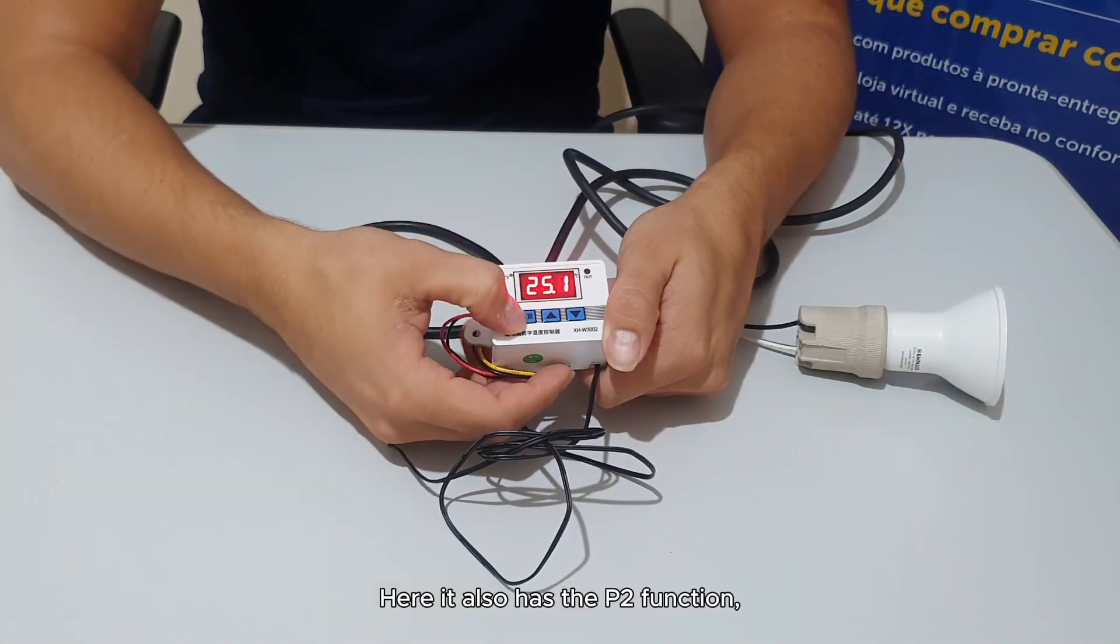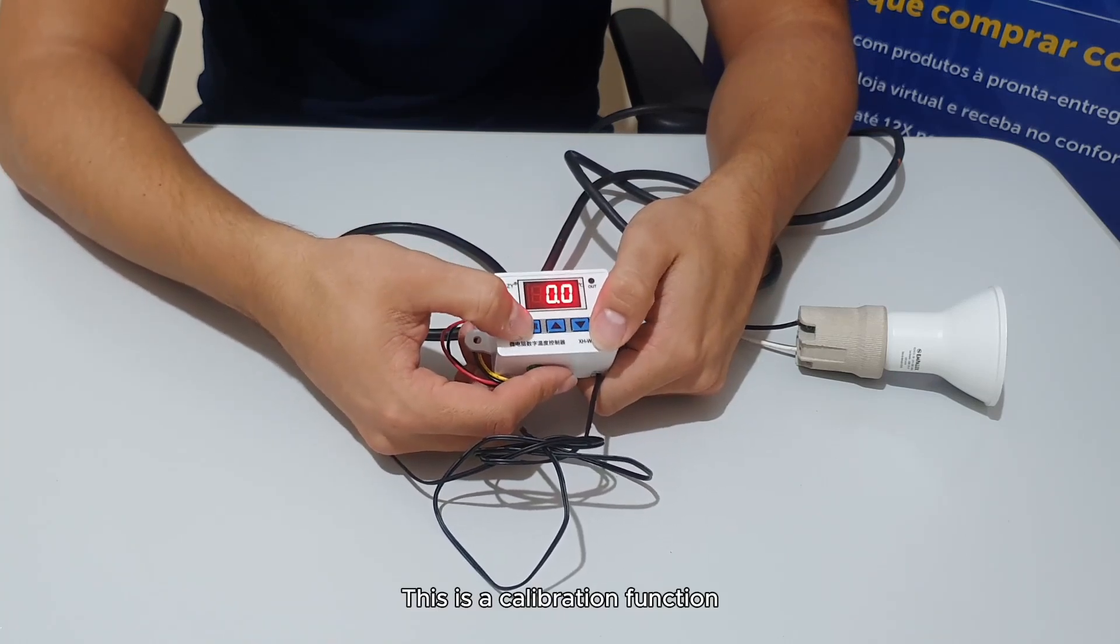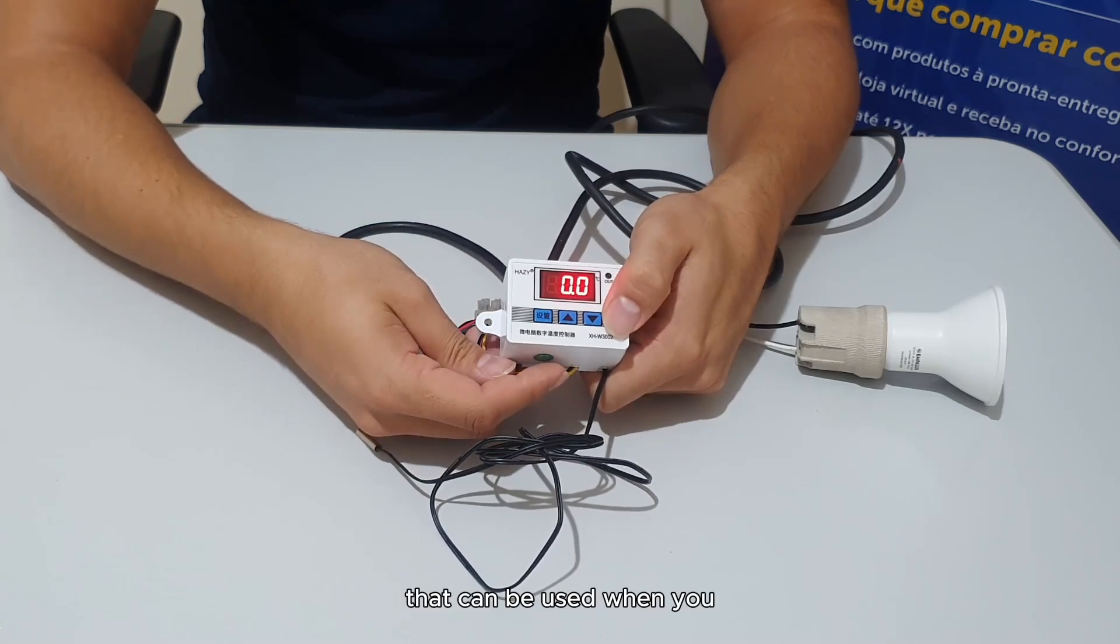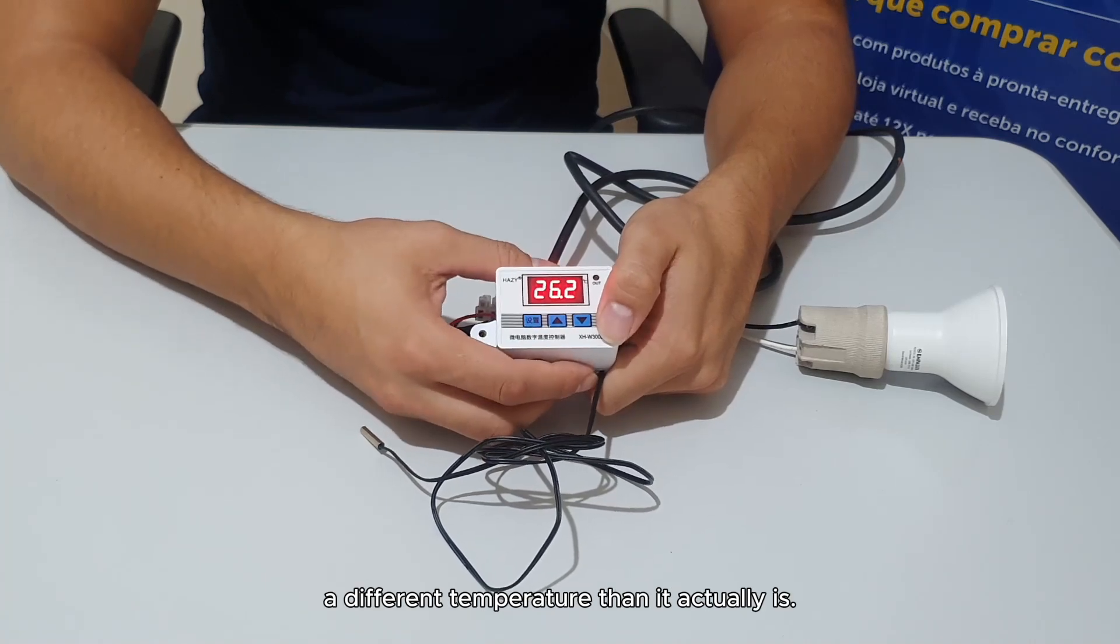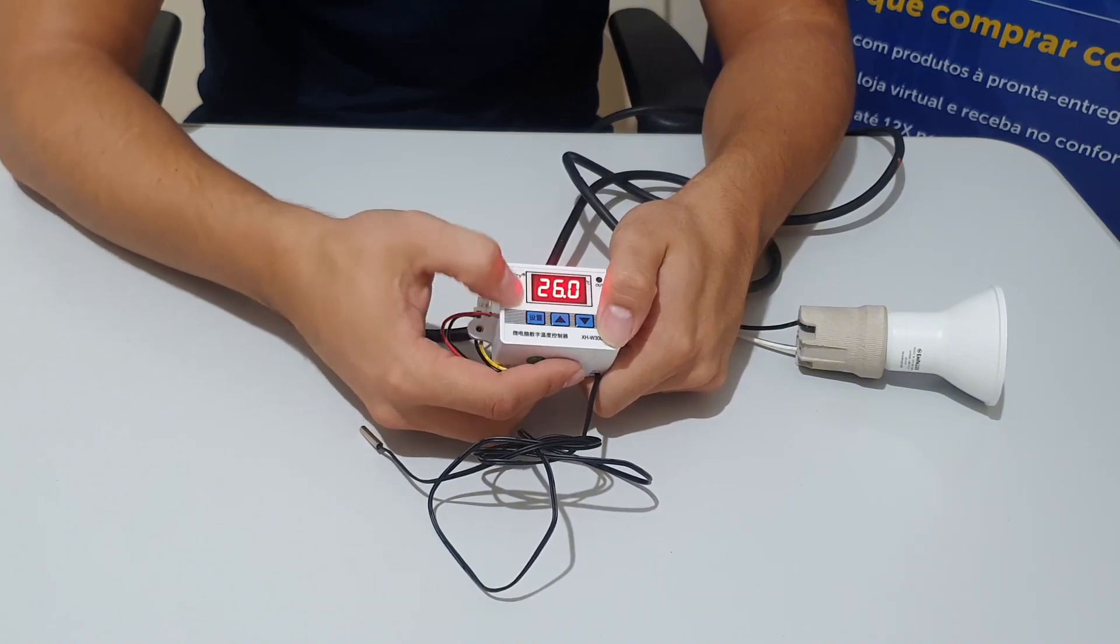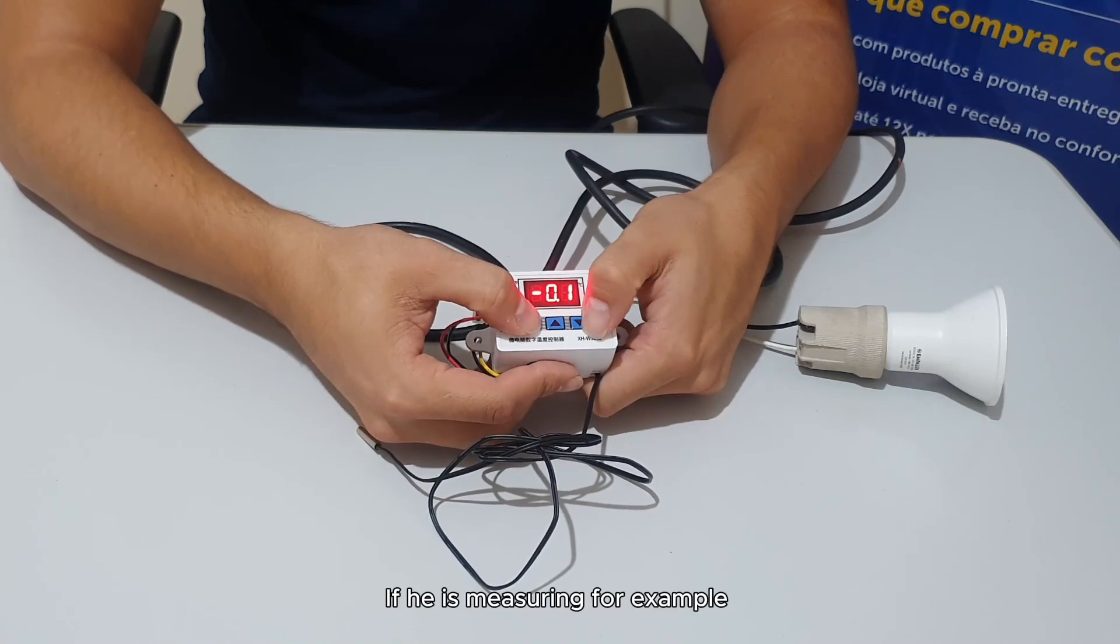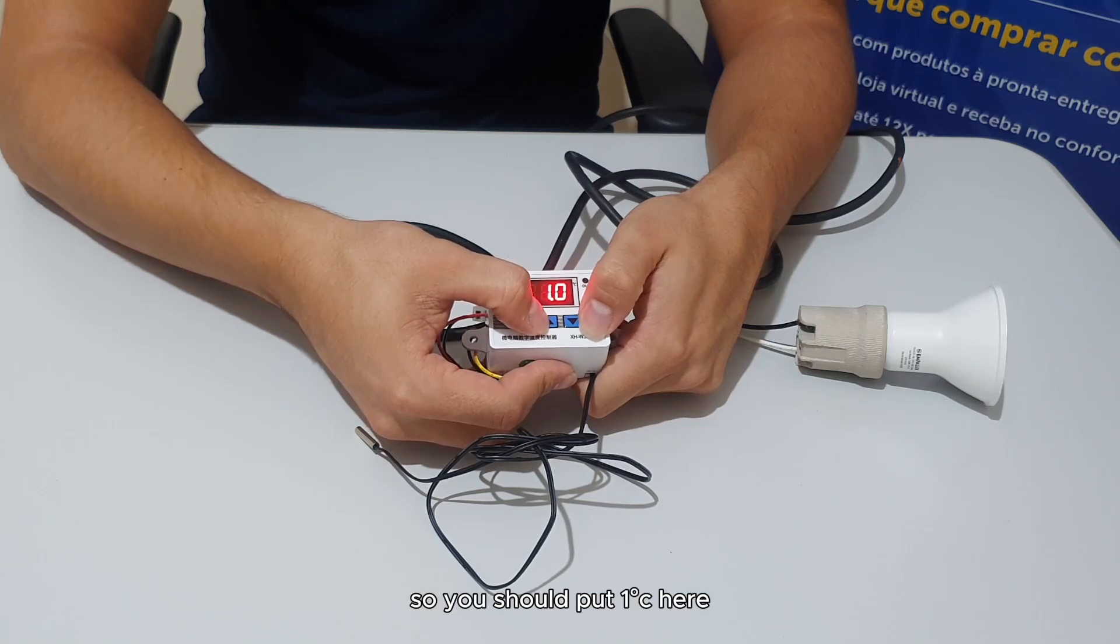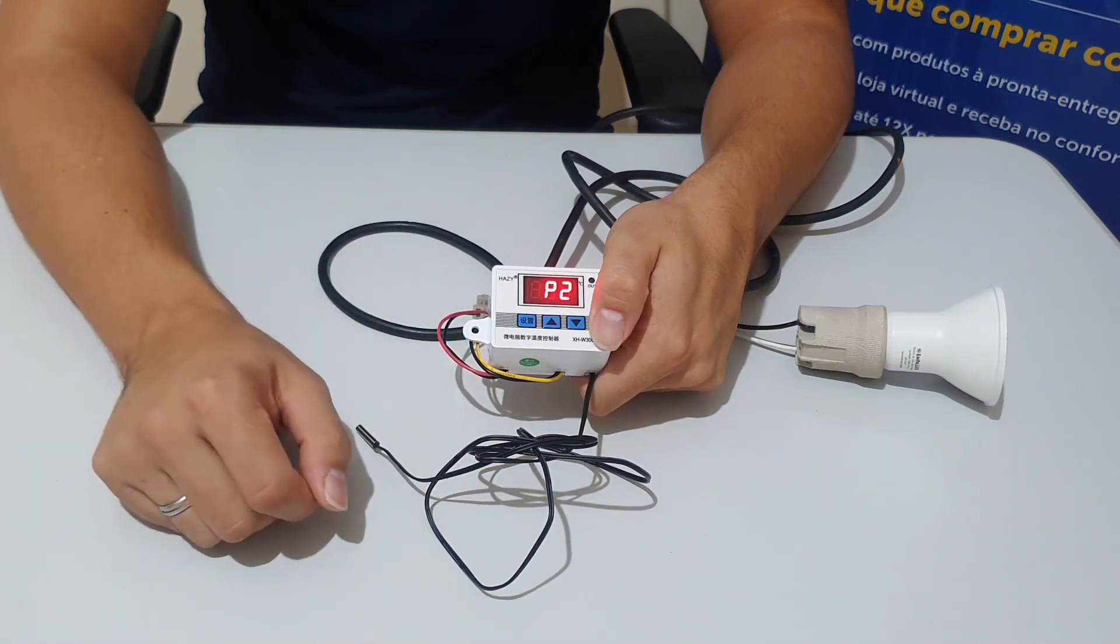It also has the p2 function. What is this function? This is a calibration function that can be used when you detect that it is measuring a different temperature than it actually is. If you have another thermometer which is measuring another temperature, we go to p2 mode. If it is measuring for example one degree celsius below, you should put one degree celsius here, which will raise the temperature one degree celsius above.